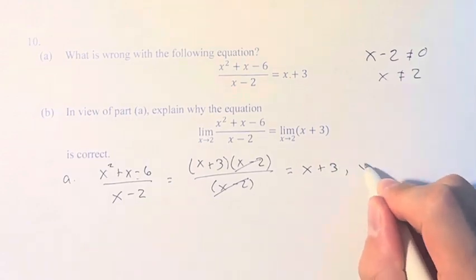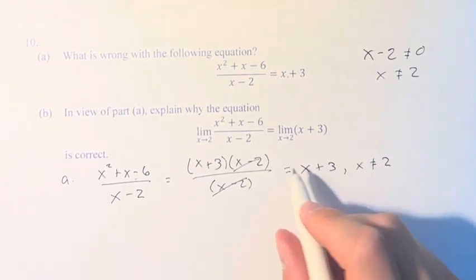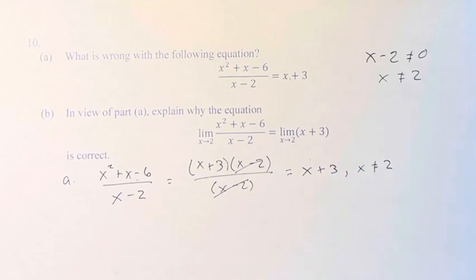So we have to add in, this is equal to x plus 3, given that x is not equal to 2. So that's what's wrong with it. It's missing a domain restriction.